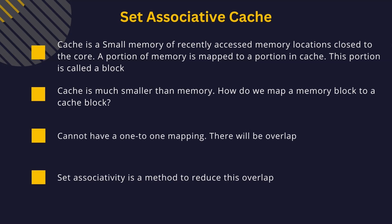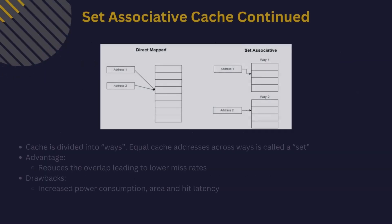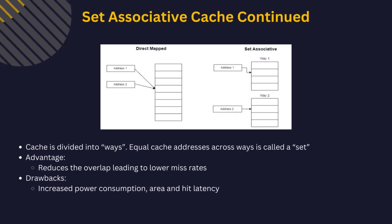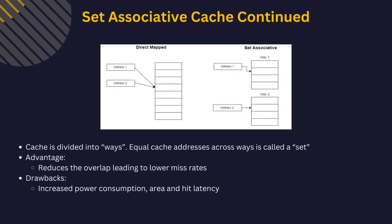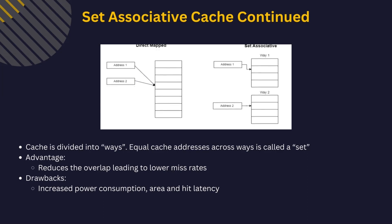Cache acts as a transparent intermediary between the main memory and the CPU. It is a high-speed memory that bridges the speed difference between the two. Since cache is much smaller than main memory, a mapping system is required. We cannot map each memory location to just one cache location as there will be overlap that reduces performance. Set associativity is a method to reduce this overlap.